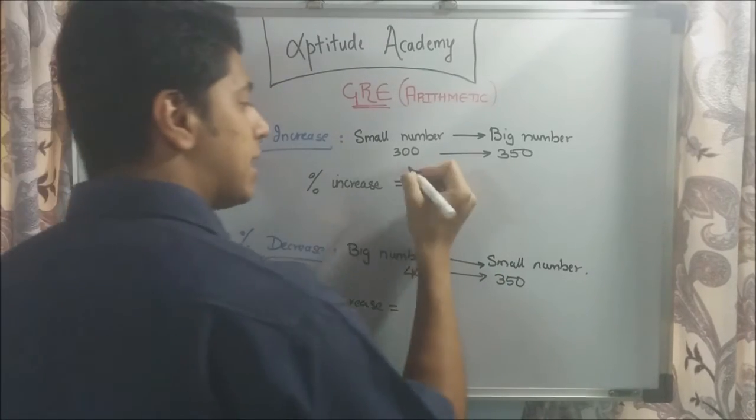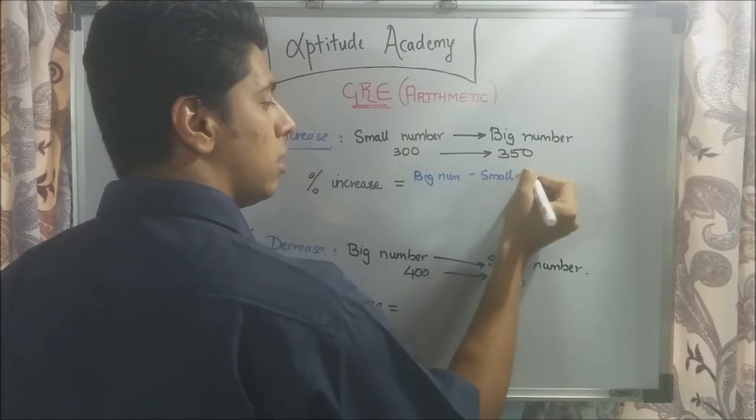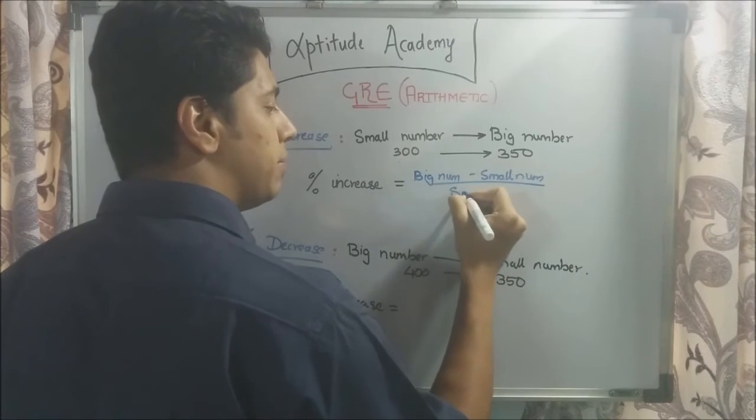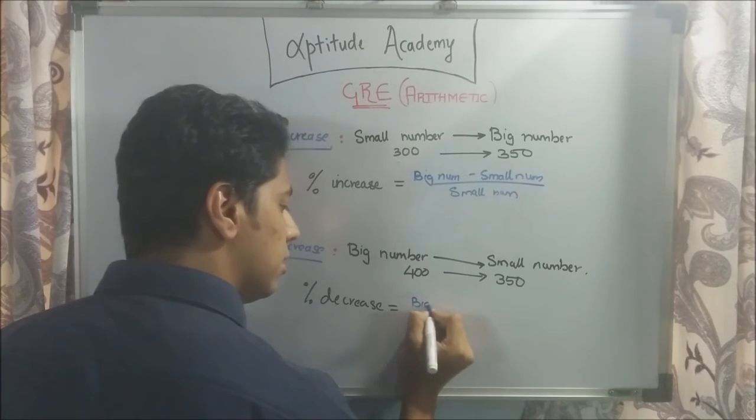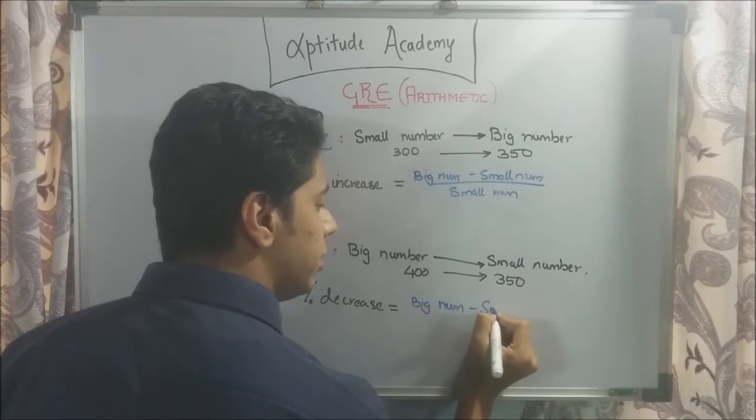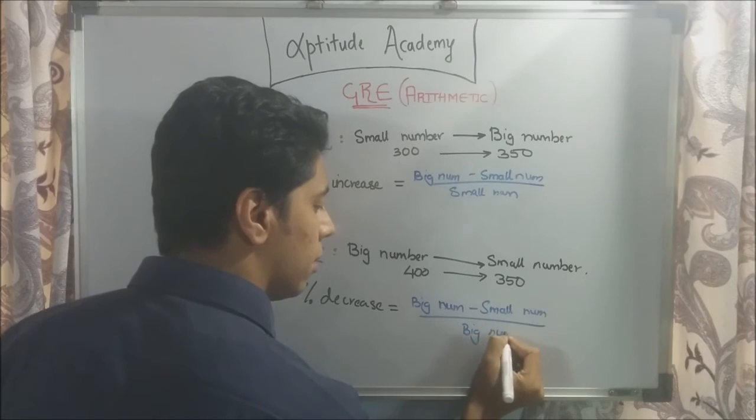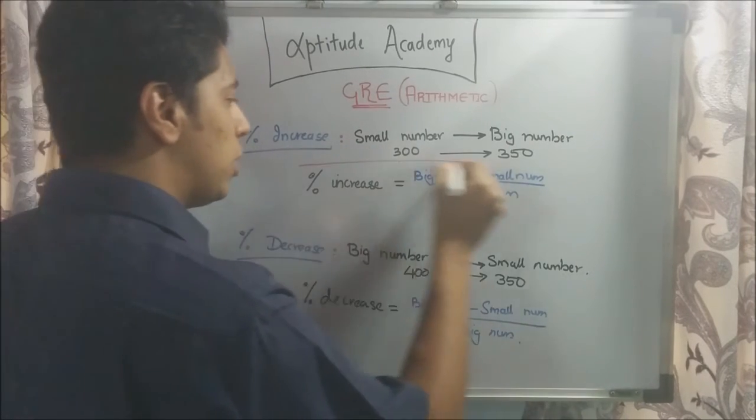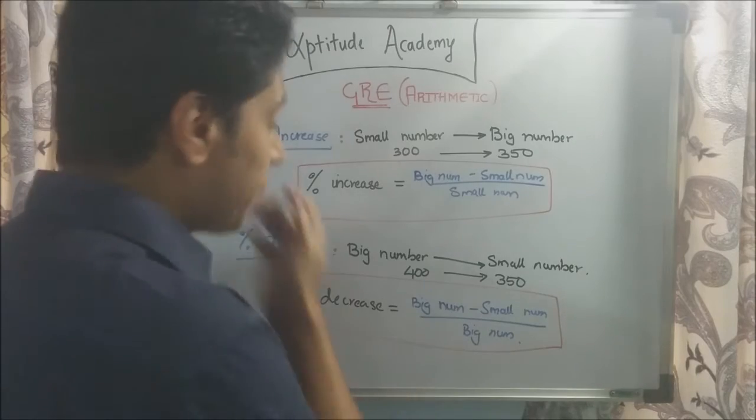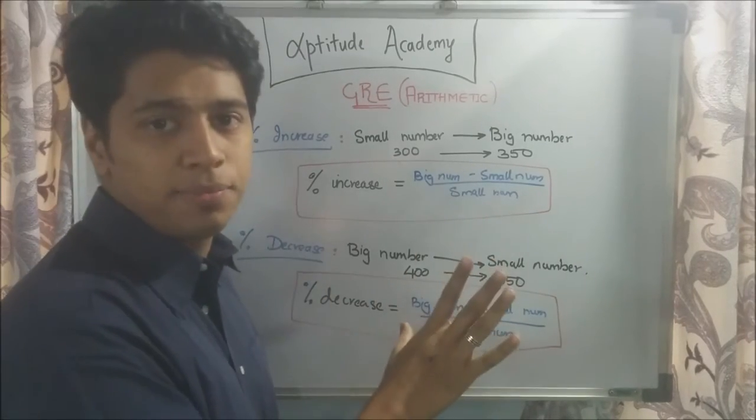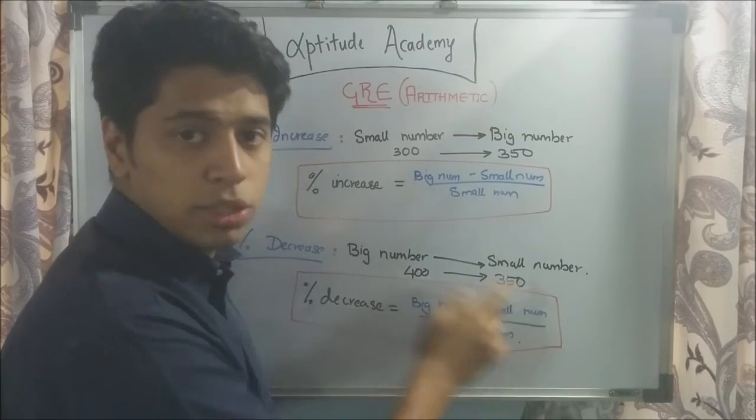Now, the formula for percentage increase is basically, big number minus small number divided by small number. And for percentage decrease, it's going to be big number minus small number divided by big number. Now, what will happen is, on the GRE, you will go and memorize this formula and you might mess it up. And if you mess it up, you lose your mark. So, the best way to understand this is to not memorize this.